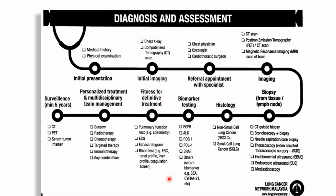After treatment, surveillance must be done for the patient for at least five years, particularly with CT scans and PET scans. As you can see, one person cannot manage lung cancer alone — it is a very long journey. It can take up to two weeks to one month just to get a definite diagnosis done and to start on the treatment that improves the outcome of lung cancer.